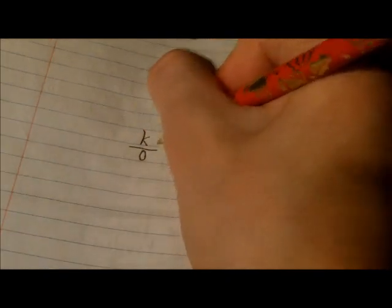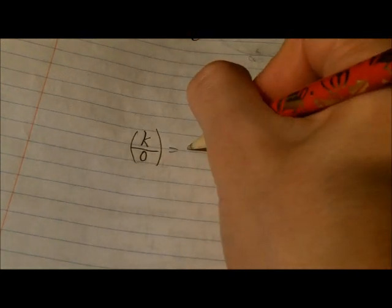The usual argument as to why we are unable to divide by zero goes as thus. Say we have some number, some real number k, and divide it by zero, and set this value equal to a.